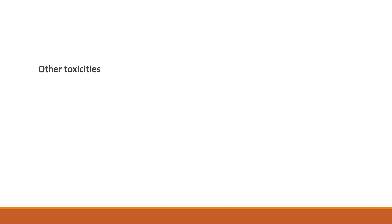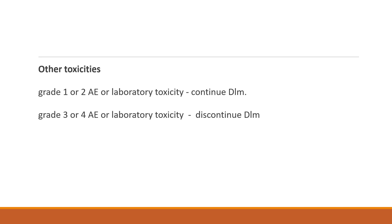For other adverse events and toxicities: if the grade is between 1 and 2, you can continue Delamanid; however, if it is grade 3 or 4, you should discontinue Delamanid. In summary, in part 1 we discussed the mechanism of action, inclusion and exclusion criteria, and WHO recommendation. In this section, we have covered pre-treatment evaluation, dosage, adverse events, and QTc prolongation, completing our discussion of the drug Delamanid.